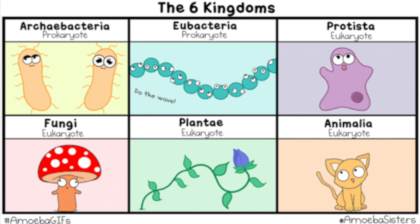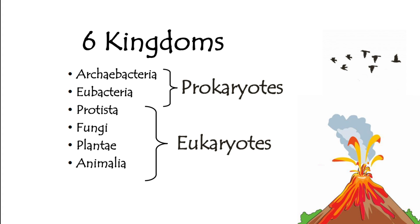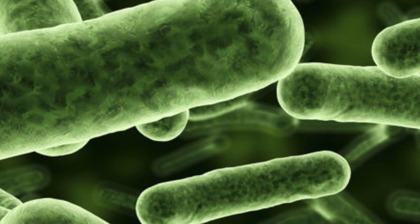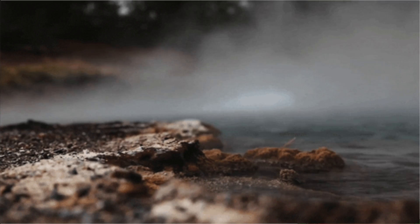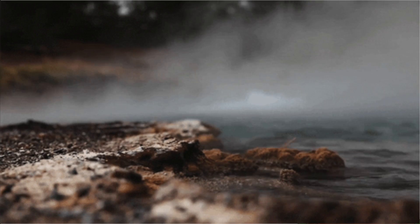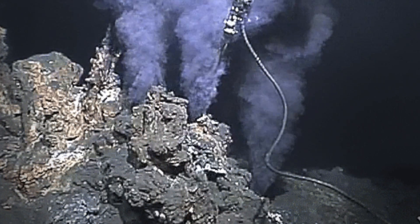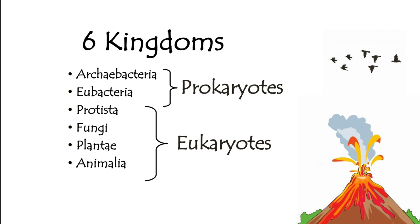The two prokaryotic kingdoms are Archaeabacteria and Eubacteria. The main difference: the prefix 'archaea' means ancient — these are considered to be one of the first, if not the first, living organisms on Earth. They're also known as extremophiles because they like extreme environments. 'Philic' means to like. Archaeabacteria live in environments that are too hot or too cold for other organisms.